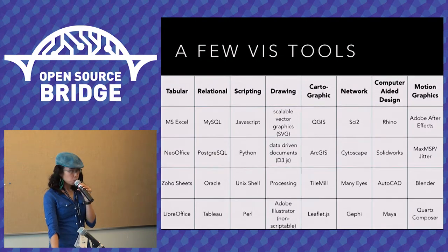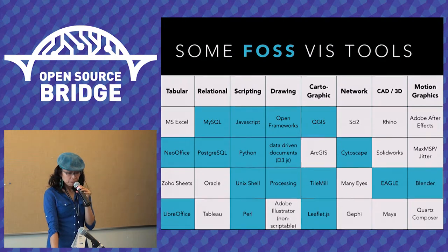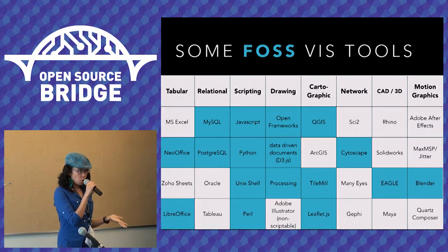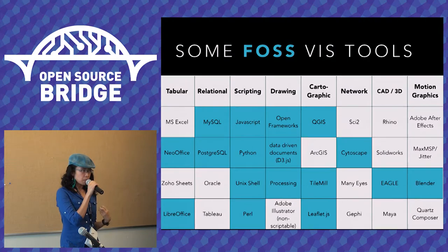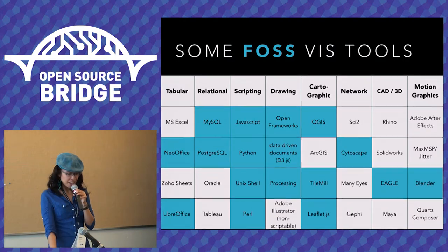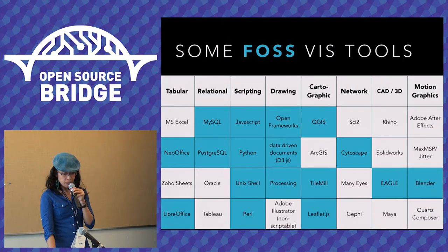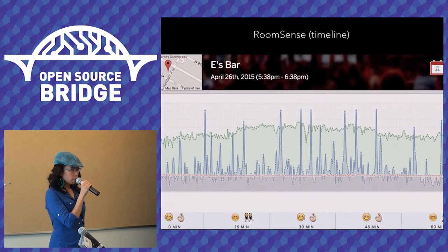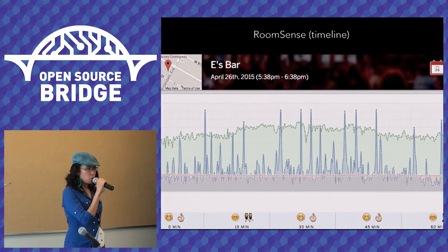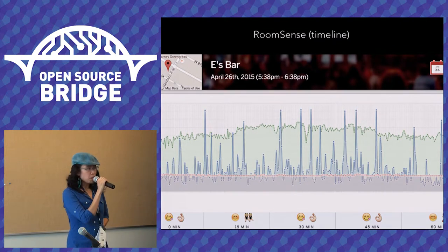Now it's time for some tools and examples in terms of visualization. These are visualization categories I go through in the process of visualizing any kind of data — particularly data I've collected myself. Highlighted in turquoise are the open source options. One notable thing: for those working with hardware from the electrical or mechanical engineering domain, there doesn't seem to be as much open source in terms of what CAD tools are available, and I'm curious to know your thoughts on that and hoping it will change.